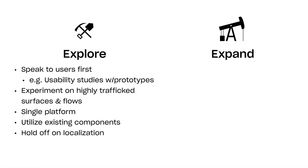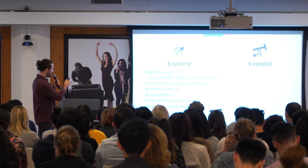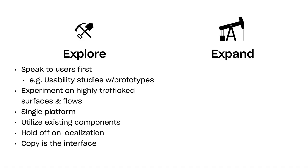Hold off on localization in the explore phase — depending on the size of the company, localization can take one to three weeks or require external vendors. Try testing in one geo and in high-traffic areas of the product where your audience is larger, which is very often in English. And remember: copy is the interface. The words you use in this stage can make or break an experiment. Make sure the language is extremely clear. You can even do usability tests on copy to find interesting insights.